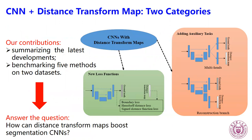Second, we benchmark five methods on two datasets. Ultimately, we want to answer the question: how can digital transform maps boost segmentation convolutional neural networks?